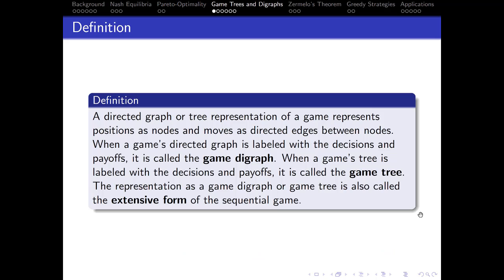A directed graph or tree representation of a game represents positions as nodes and moves as directed edges between nodes. When a game's directed graph is labeled with decisions and payoffs, it's called the game digraph. When a game's tree is labeled with decisions and payoffs, it's called the game tree. This representation can also be called the extensive form of the sequential game.